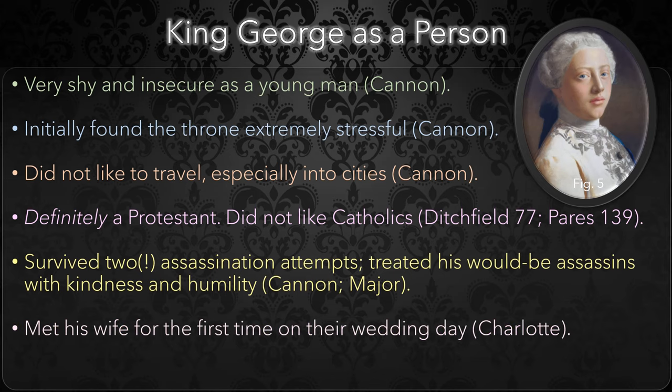King George met his wife, Queen Charlotte, for the first time on the day they were wed, which seems strange today, but was not that uncommon for royalty in George's time. Nevertheless, their marriage was happy, and King George did not ever take on any mistresses, unlike his two immediate predecessors and his son, King George IV.